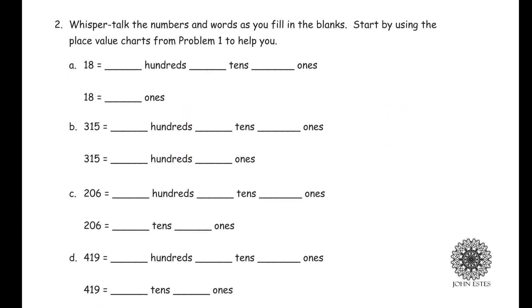You'll also have questions that look like this — whisper-talk the numbers and words as you fill in the blanks, starting by using the place value charts from problem one to help you. If I had eighteen in terms of hundreds, tens, and ones, looking back at my previous work and whisper-talking this...